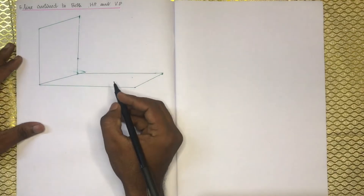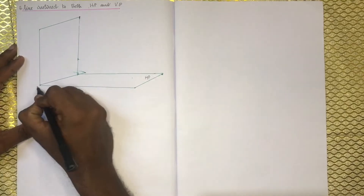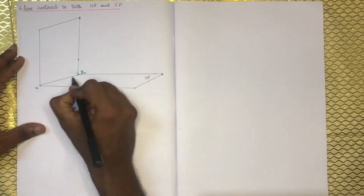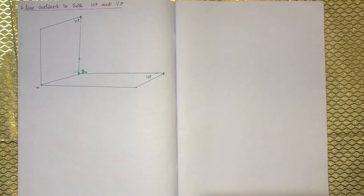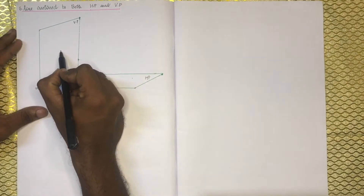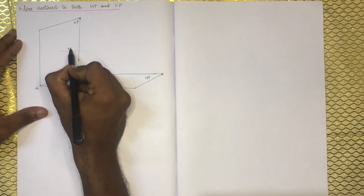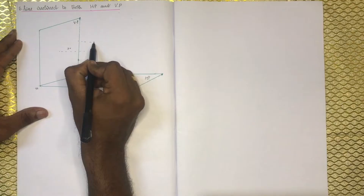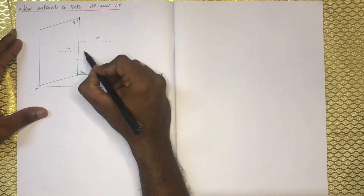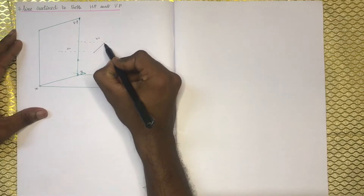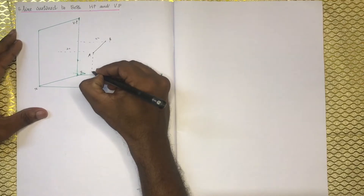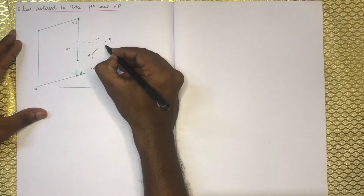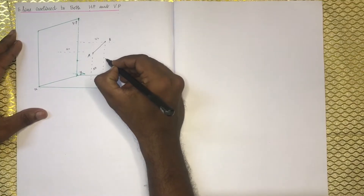The HP is the horizontal plane. This is the XY line and this is the vertical plane. The line will be inclined to both HP and VP. The line will be 50mm and the heights will be 50mm and 70mm.